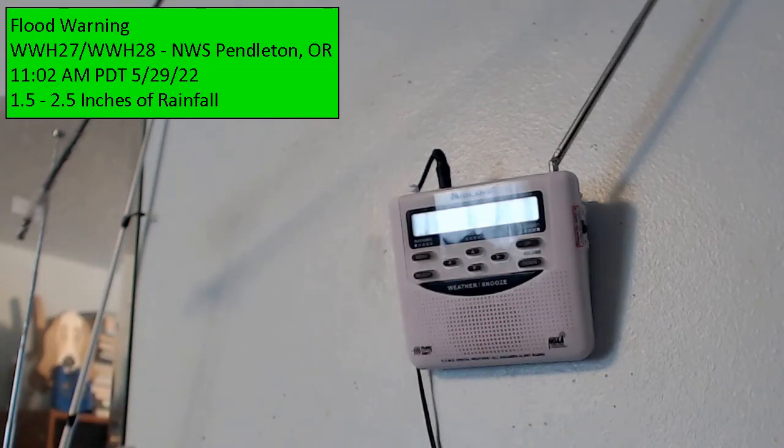Aerial flood warning for the following county: Umatilla, Oregon. Flood warning in effect until 4 p.m. Pacific Daylight Time this afternoon.